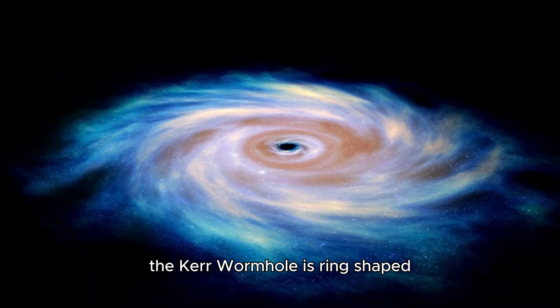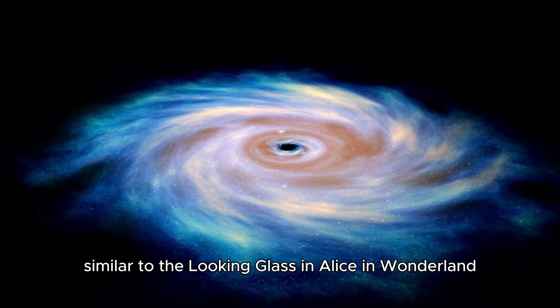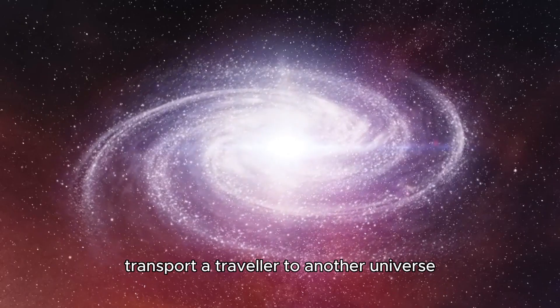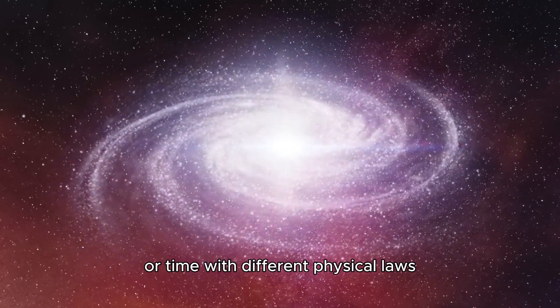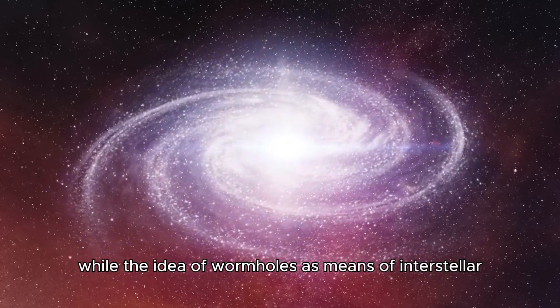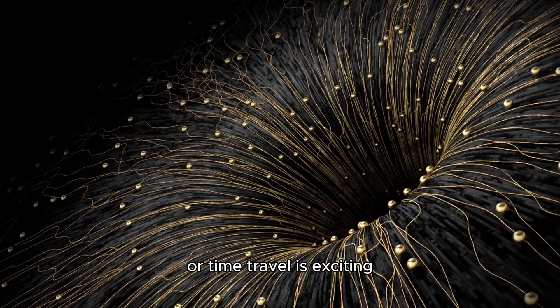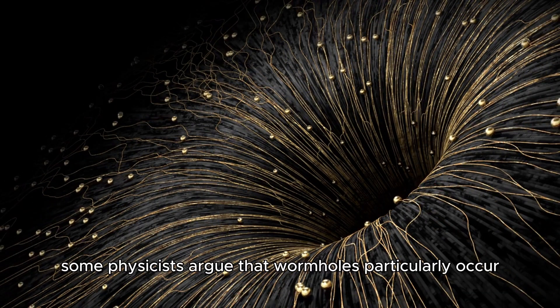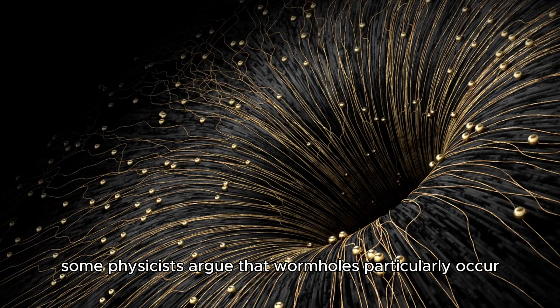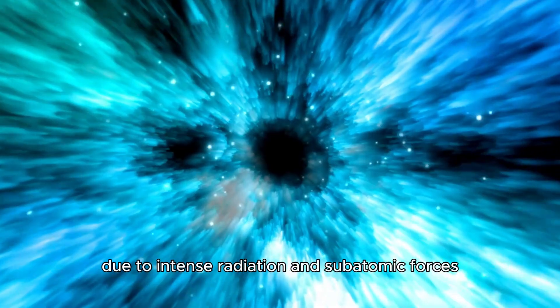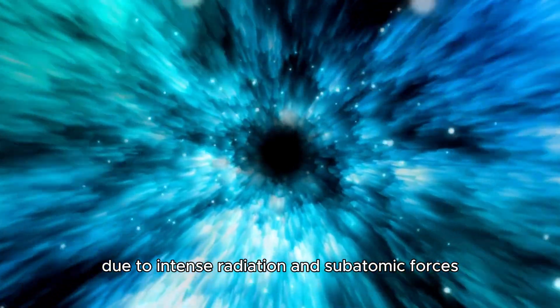The Kerr wormhole is ring-shaped, similar to the looking glass in Alice in Wonderland, where passing through it could potentially transport a traveler to another universe or time with different physical laws. While the idea of wormholes as means of interstellar or time travel is exciting, it is also controversial. Some physicists argue that wormholes, particularly Kerr wormholes, might be unstable or impossible to traverse due to intense radiation and subatomic forces.